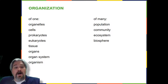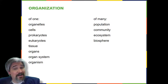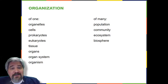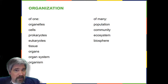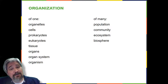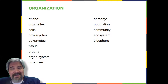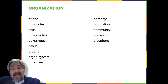All the individuals of a species living within a specific area are collectively called a population. For example, a forest may include many white pines — all of these pine trees represent the population of white pine trees in that forest. Different populations may live in the same area, such as populations of flowering plants, insects, and microbial populations. A community is a set of populations inhabiting a particular area. The forest itself is an ecosystem, which consists of all the living things in a particular area together with the abiotic, non-living parts of that environment, such as nitrogen in the soil or rainwater. At the highest level of organization, a biosphere is the collection of all ecosystems and represents the zones of life on Earth, including land, water, and portions of the atmosphere.